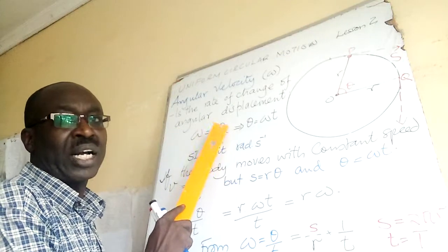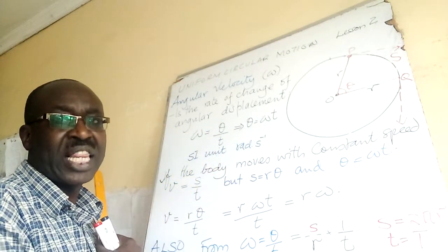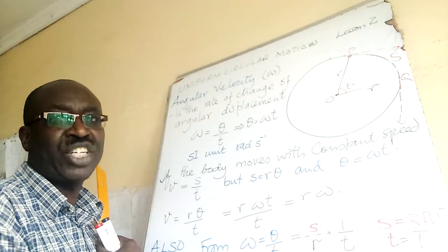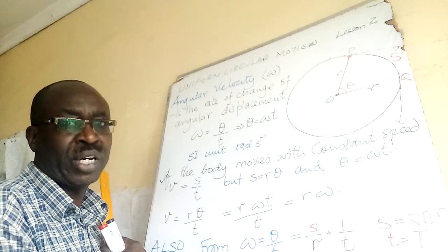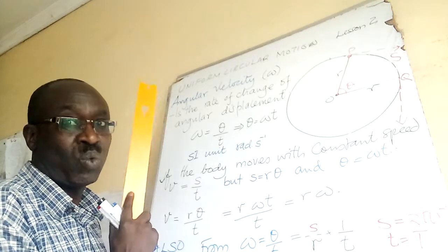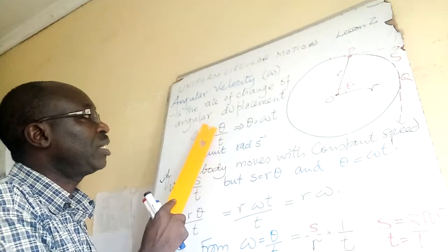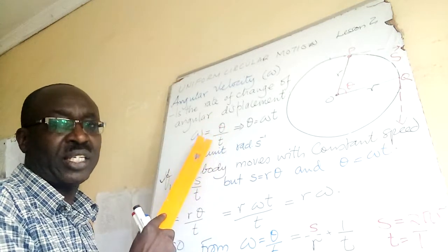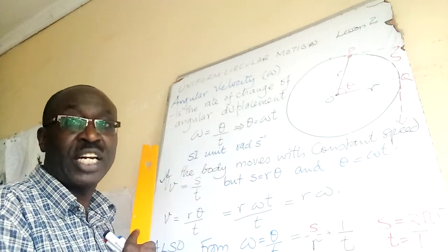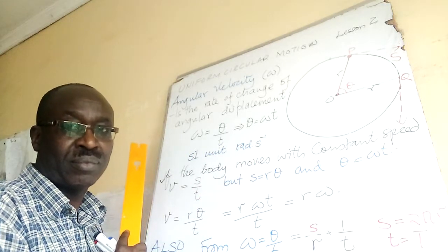Cross-multiplying gives us theta in radian equals omega times t. The SI unit: angular displacement is measured in radians and time in seconds, so angular velocity is measured in radians per second.